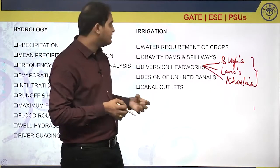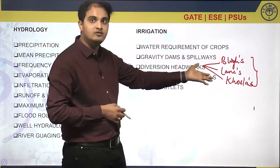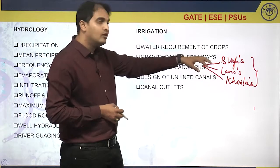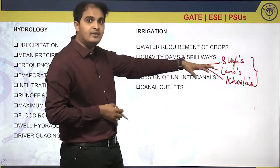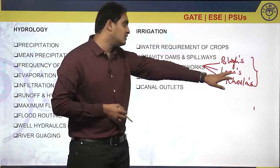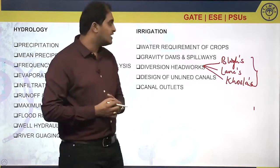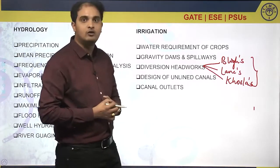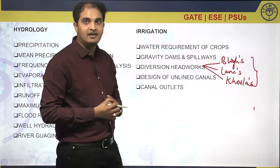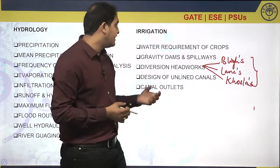In these theories we need to focus on the creep length, creep coefficient, the head, pressure head, and datum head — each and everything across all three theories. Khosla's theory focuses on exit gradient, and the calculation of exit gradient is an important model in the GATE exam.